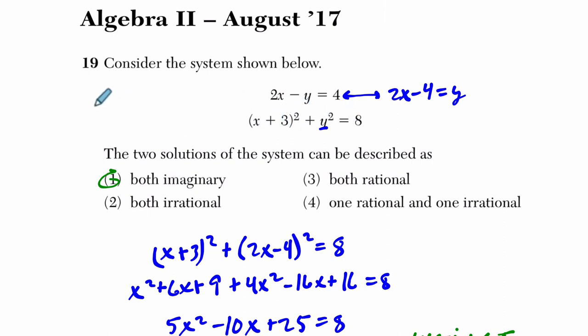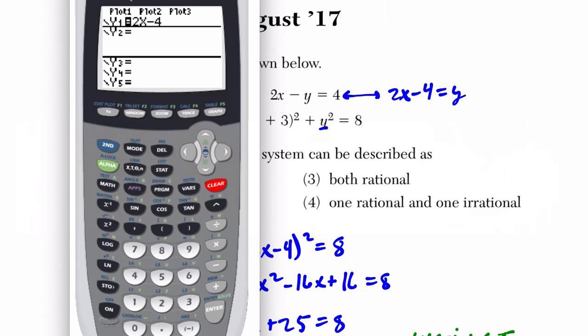Well, I'm going to subtract (x + 3)². So y² equals, subtract this term, so it's -(x + 3)² + 8. Take the square root of both sides, and y equals the positive or negative square root of this whole thing, -(x + 3)² + 8. Now, we can't graph the positive and negative of this at the same time. We have to graph them separately on the calculator.